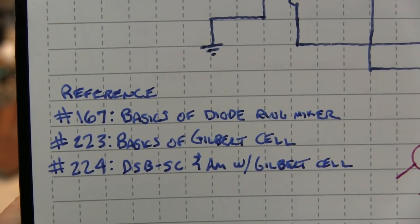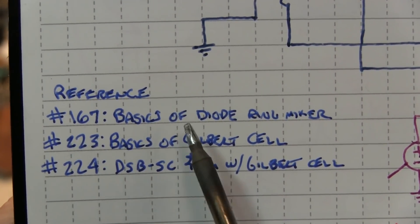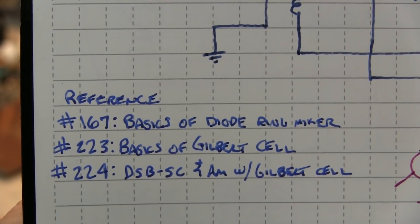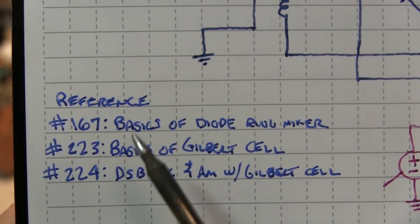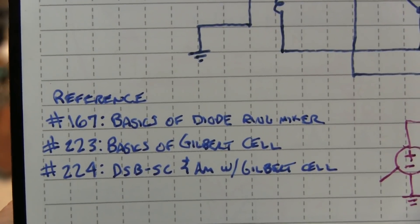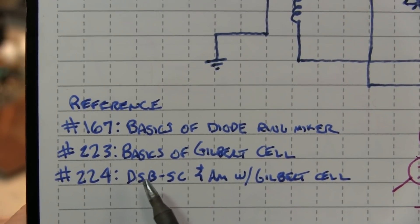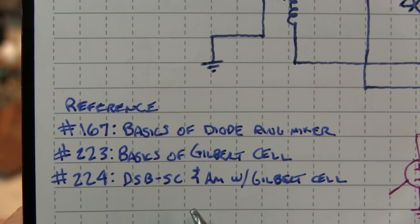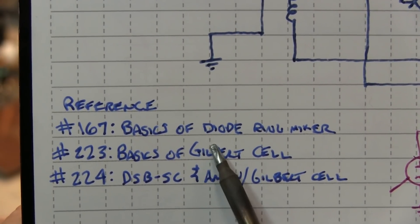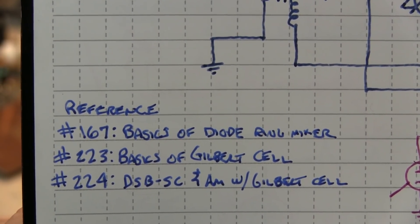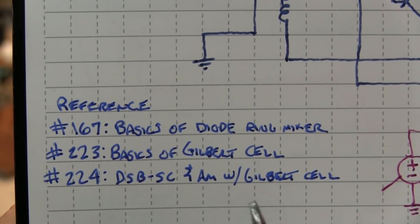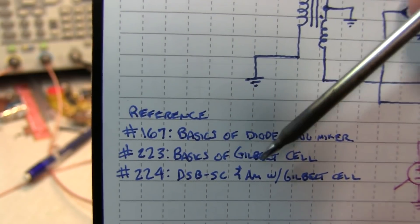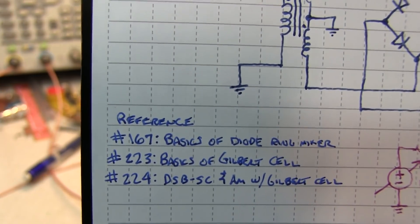And prior to that I had done other videos on mixers, including the diode ring double balance mixer, video number 167. So the question that my viewer raised was, well, I showed how you can get either double sideband suppressed carrier, or AM with a Gilbert cell style mixer, but can you do the same thing with a diode ring mixer? And the answer is of course yes, so let's go take a look at it. I'll add links to all three of these videos in the video description down below.